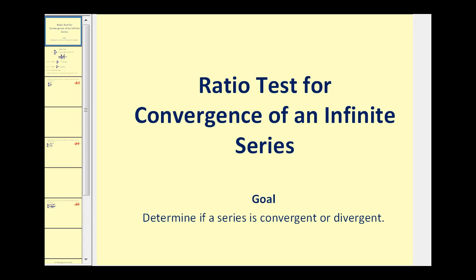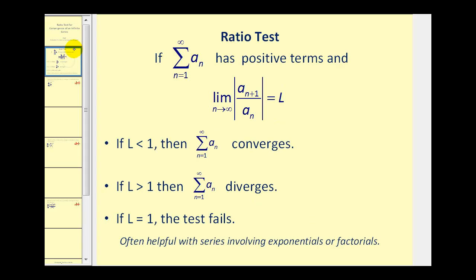Welcome to a lesson on the ratio test for convergence of an infinite series. If our infinite series has positive terms, we take the limit as n approaches infinity of the absolute value of a sub n plus one divided by a sub n, and set it equal to L.